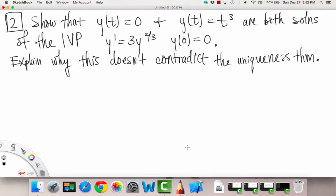Alright, here's number 2. We're going to show that y(t)=0 and y(t)=t³ are both solutions to the IVP, to the initial value problem